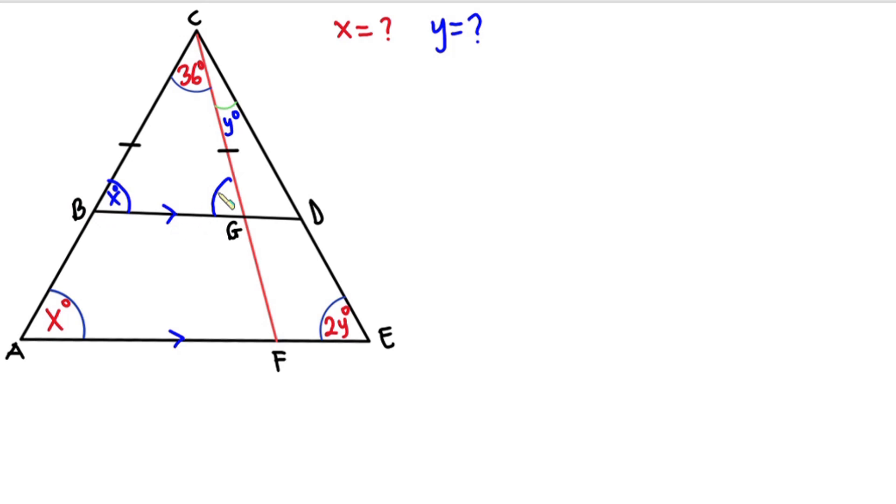Now the sum of interior angle of a triangle is 180 degrees, so we have x plus x plus 36 degrees is equal to 180 degrees.